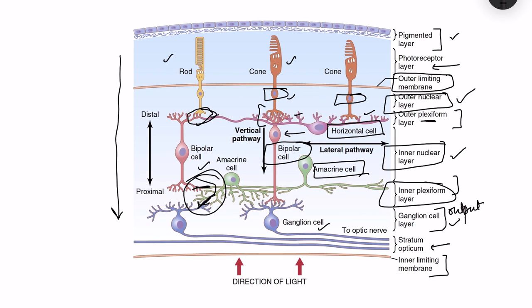The direction of light is from inner to outer. Light crosses all these layers and reaches the photoreceptors where it stimulates them. It also reaches the pigmented layer, which absorbs extra light and prevents scattering. Because of this, photoreceptors are stimulated only from where the light is coming and the light doesn't scatter to stimulate all photoreceptors.